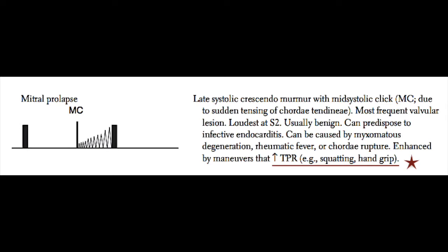The murmur of mitral valve prolapse is classically seen as a late systolic crescendo murmur with a mid-systolic click. This mid-systolic click is the hallmark of mitral prolapse and is caused by sudden tensing of the mitral valve chordae tendineae. Mitral prolapse is the most frequent valvular lesion seen in the United States. It can also cause a reverberating murmur that is generally loudest at the S2 point. Mitral prolapse is usually benign, but it can predispose a patient to infective endocarditis and can also cause mitral valve regurgitation.